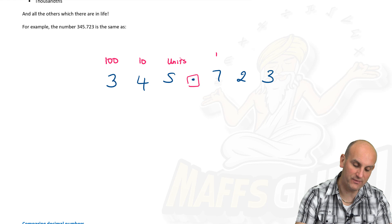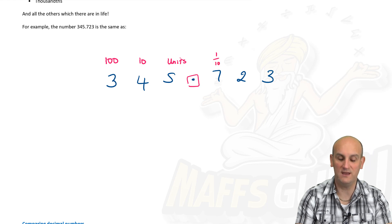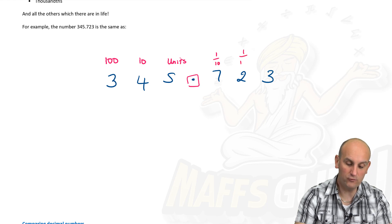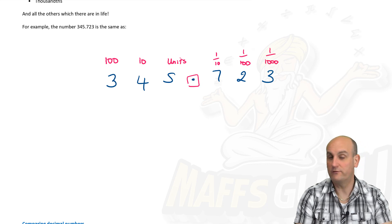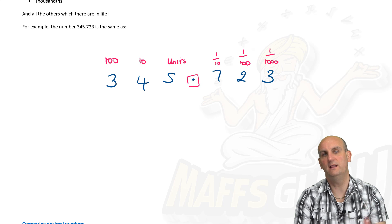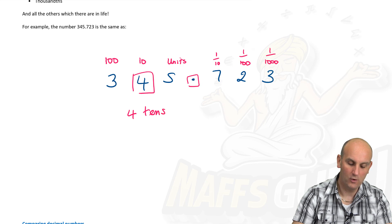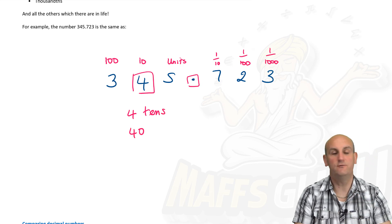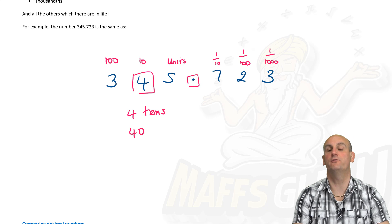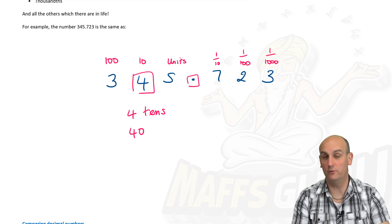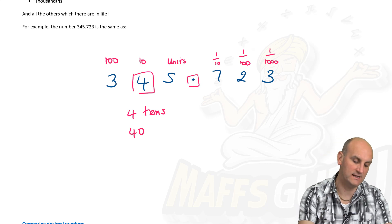After the decimal point: this is my tenths column — one tenth — this is my hundredths column, and this is my thousandths column. So long as when you're dealing with numbers you line them up in the right place and you realize that the digit 4 here stands for four tens, or forty, then you've got number and place value pretty much sorted.